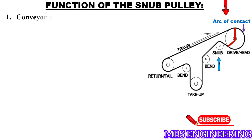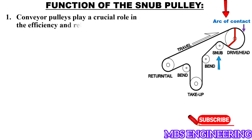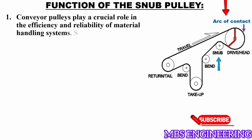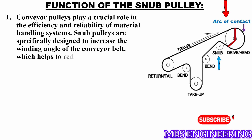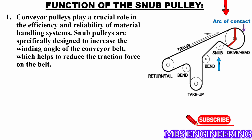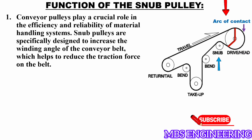The first function is that snub pulleys are specifically designed to increase the winding angle of the conveyor belt, which helps to reduce the traction force on the belt. Please refer to the conveyor belt layout diagram.